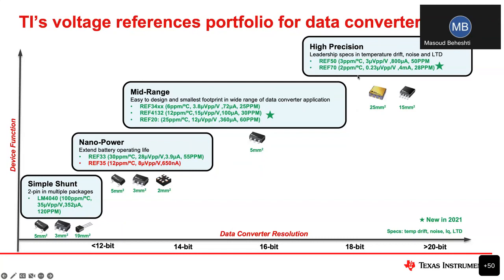Finally, for high precision applications — including test and measurement, medical imaging, or any application using high-resolution data converters typically above 20 bits — we have two leadership devices: REF50 and REF70. REF70, released last year, has industry's lowest noise at 0.23 microvolts peak-to-peak, exceptionally low long-term drift of 28 ppm, and a temperature coefficient of only 2 ppm per degree C. This device is commonly used in instrumentation, battery test equipment, semiconductor testing, and similar applications.